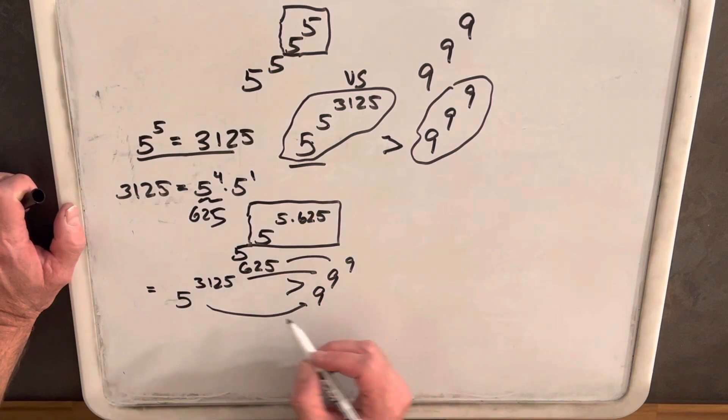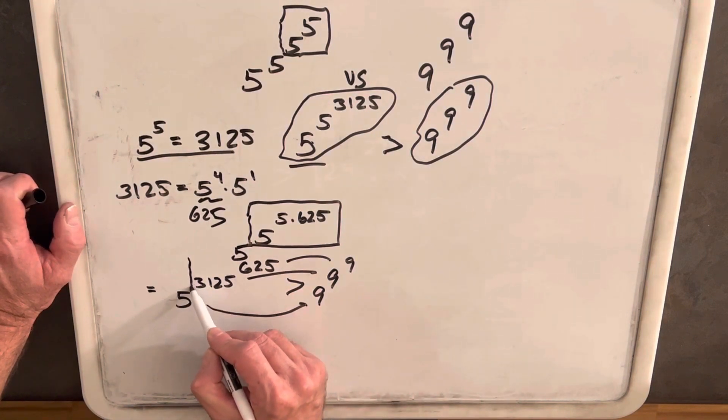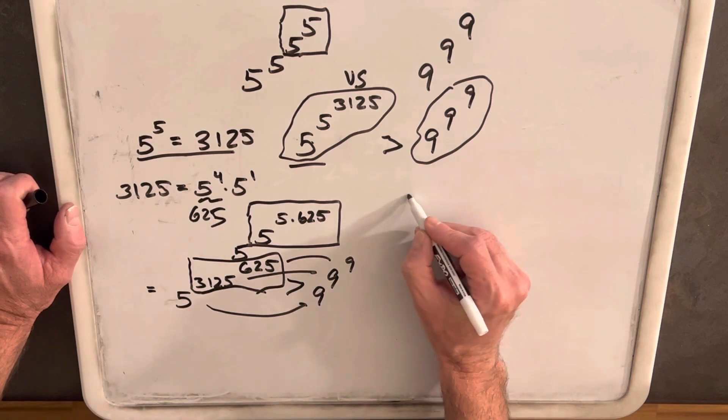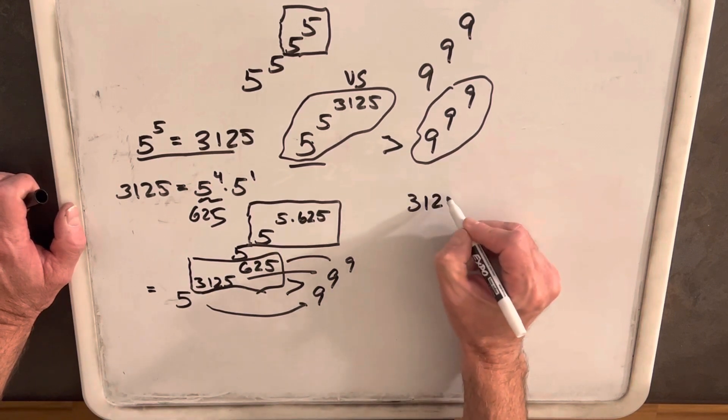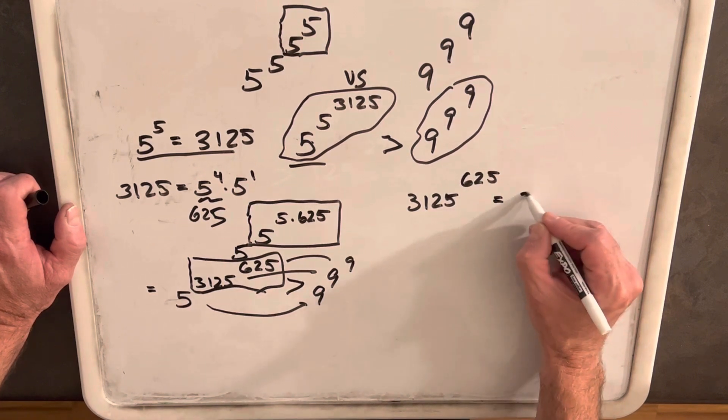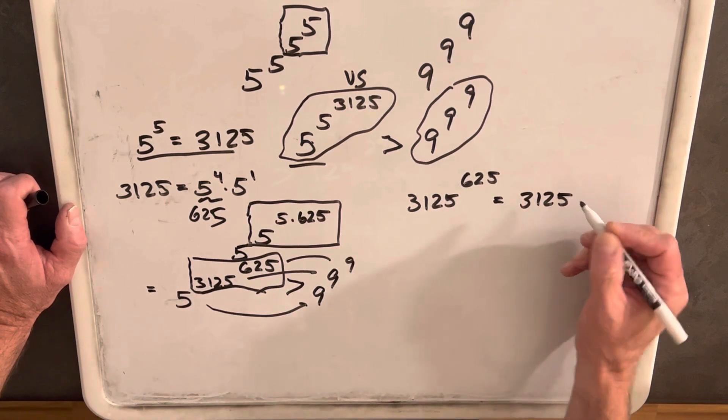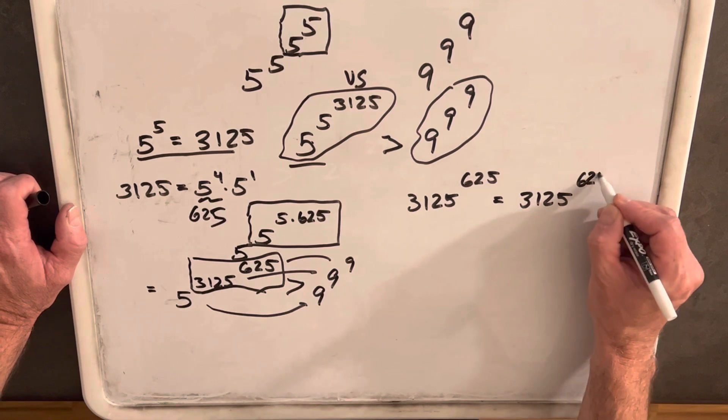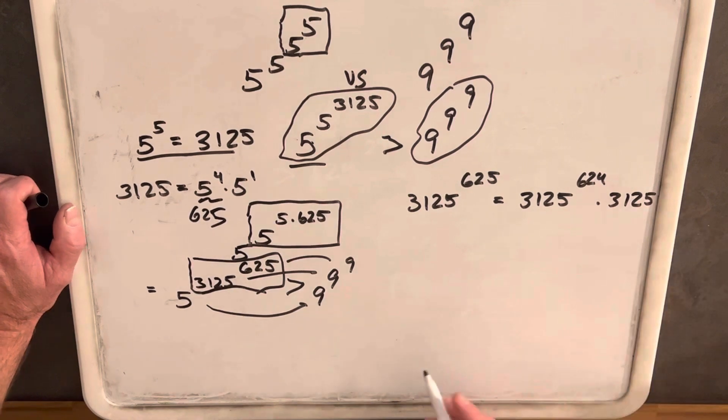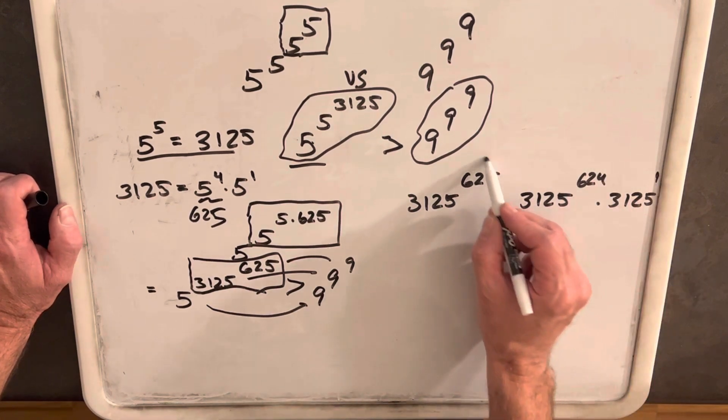What I'll do with this, so again, kind of just focusing on the exponent, we'll just break this out: 3,125 times 625. This can be separated like 3,125 to the 624 times 3,125, right? Because when you add the exponents, you get back to 625.